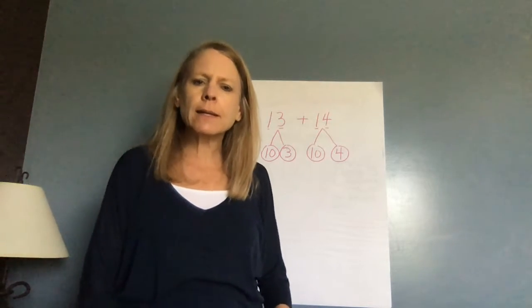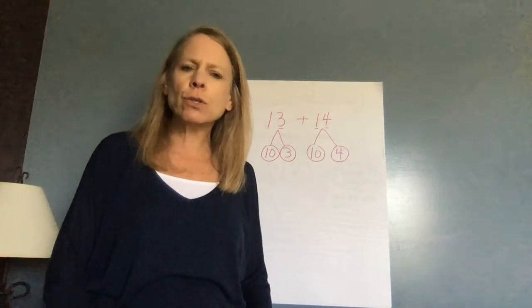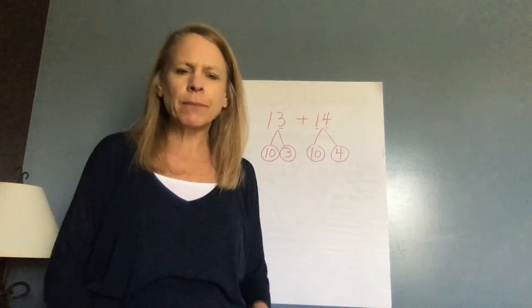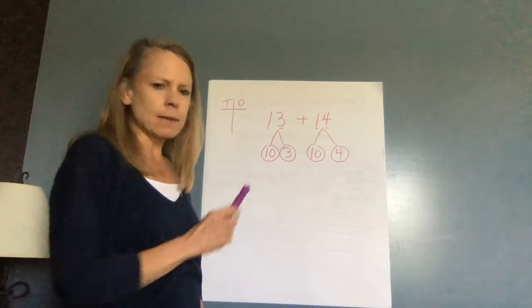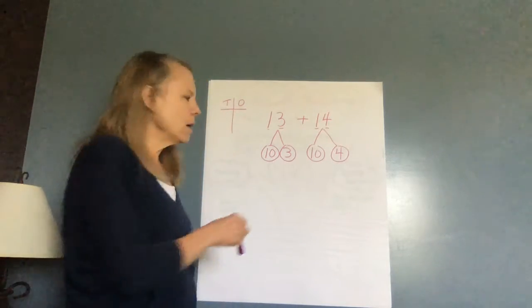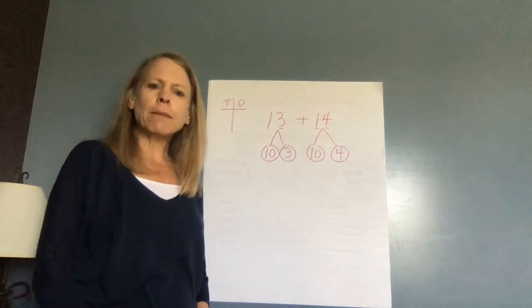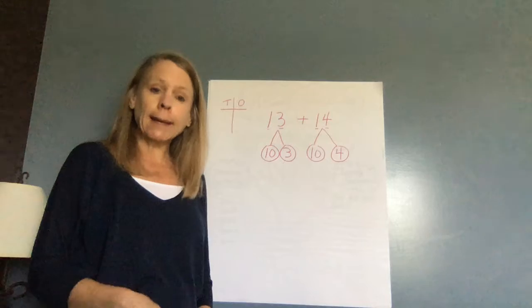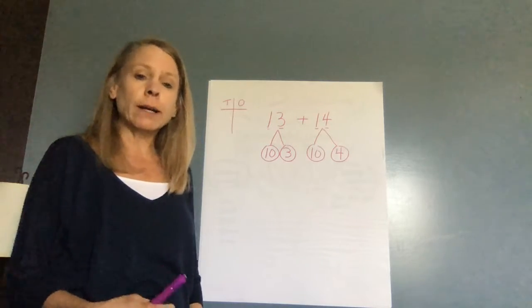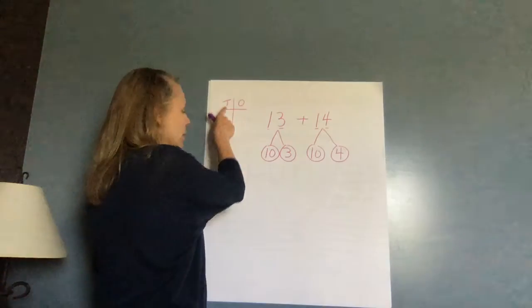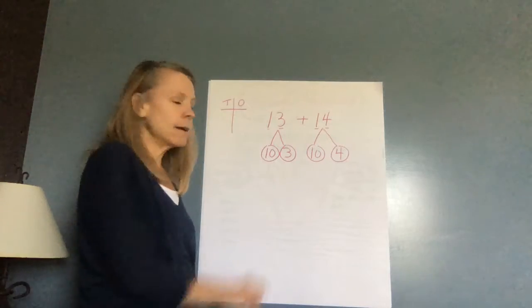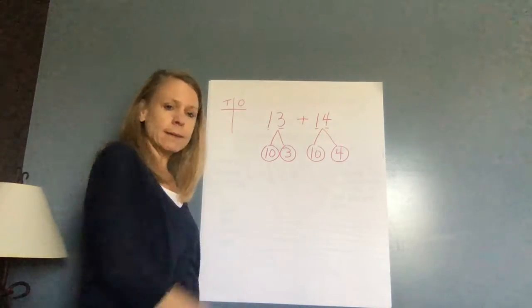Hi, boys and girls. Today we're going to continue talking about adding two two-digit numbers together. Remember when we talk about a digit, this has one, two digits. And I'm also thinking about the place that those digits are in. I know that I have the tens place and I have the ones place.